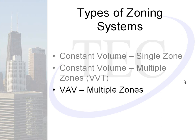The most common type of constant volume single zone in today's application would be a thermostat — a thermostat that turns on and off a rooftop unit. VVT has multiple sensors that communicate back to the rooftop unit, telling it how to operate. That's the system we're going to go through today.